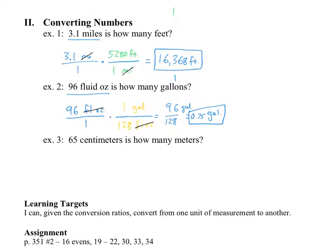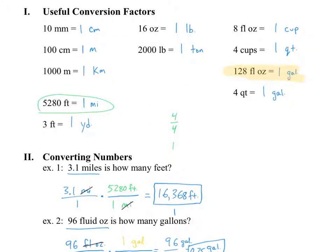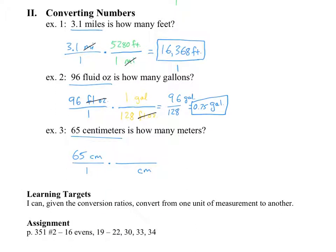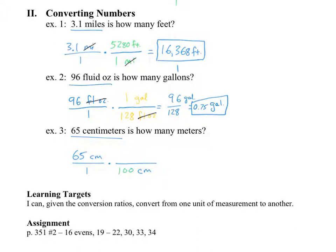All right, one final one. Then we are done for the section. 65 centimeters is how many meters. So just like always, 65 centimeters, let's put it over 1. So 65 cm divided by 1. And I'm going to have to have centimeters down below to get that to cancel. So if you're not familiar with it off the top of your head, we can go over here and say, well, we need to look at centimeters and meters and how those are connected. And that's going to be right there. 100 centimeters is 1 meter. So I'll jump down here. And I have 100 centimeters is 1 meter. Okay. And units cancel out beautifully just like we wanted to. So the only units that are left are meters.